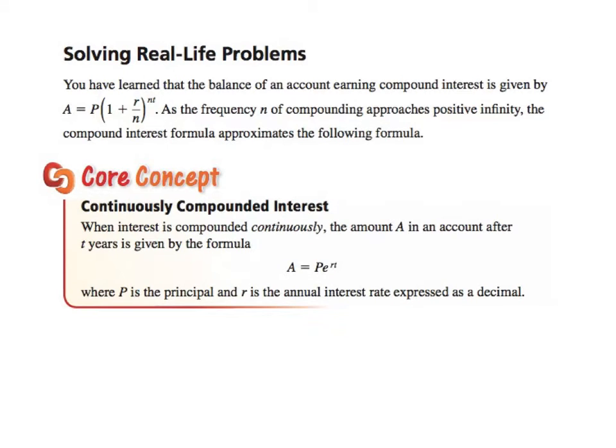So solving real-life problems. You have already learned that the balance of an account earning compound interest is given by a function. As the frequency n of compounding approaches positive infinity, the compound interest formula approximates the following. When interest is compounded continuously, the amount A in the account after t years is given by A = Pe^(rt), where P is the principal, r is the annual interest rate as a decimal, and t is time.